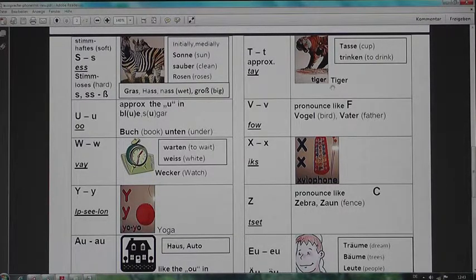T, like in the word tiger, if you pronounce a letter in a word. Tasse, cup, trinken, to drink. U, approximately like the U in blue, sugar. Die Wörter Buch, book, unten, under. V, the alphabet, the ABC spelling, pronounced exactly like the F, you remember, spelling fish, Vogel, bird, Vater, father.